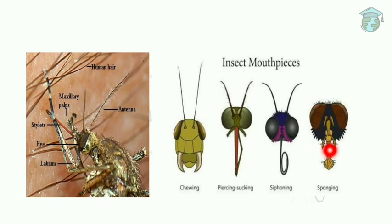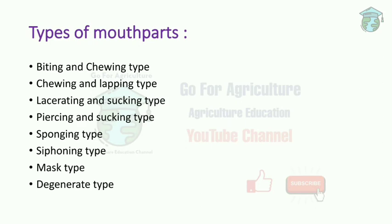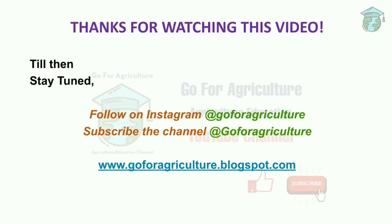In the next lecture we will discuss the types of mouth parts in detail: biting and chewing type, chewing and lapping type, piercing and sucking type, sponging type, siphoning type, mask type, and degenerate type. I hope this lecture was clear. For any doubts, ask on Instagram or in the comments. You can also download the PDF of this lecture from the given website.